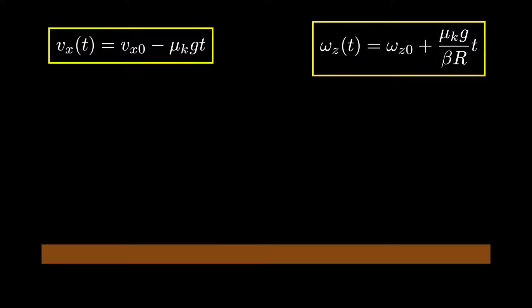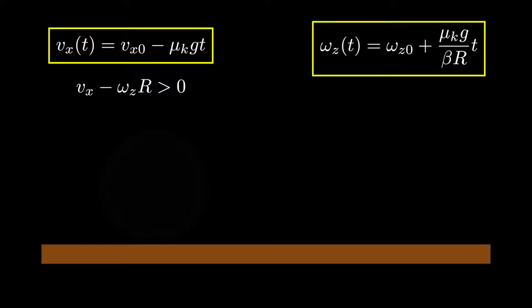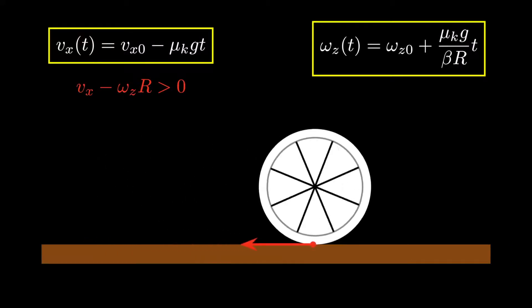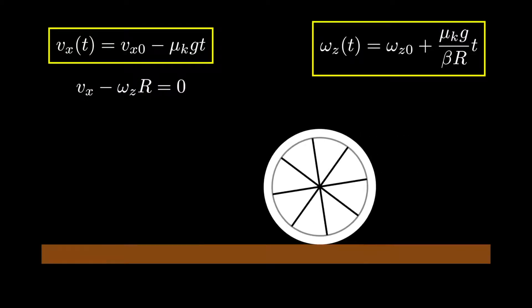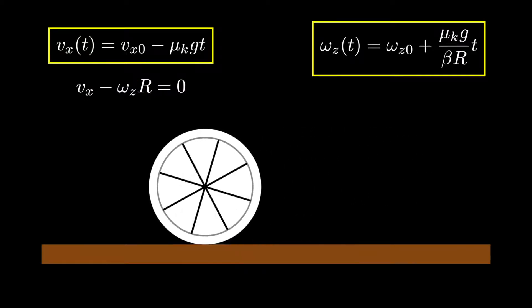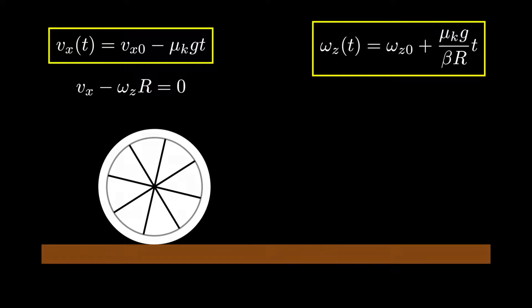At this point, it's a good idea to pause and gather our thoughts. Recall that we assumed the point at the bottom of the object initially had a positive velocity, resulting in a negative friction force. Applying Newton's laws then resulted in a decreasing translational velocity and an increasing rotational velocity, both of which lead to a decrease in the velocity of the point at the bottom of the object. This velocity will continue to decrease until it reaches zero, at which point the friction force disappears and the object begins moving with a constant velocity as it rolls without slipping. Thus, our solutions for the translational and rotational velocities are only valid before the object begins rolling without slipping, a time we refer to as the no-slip time.